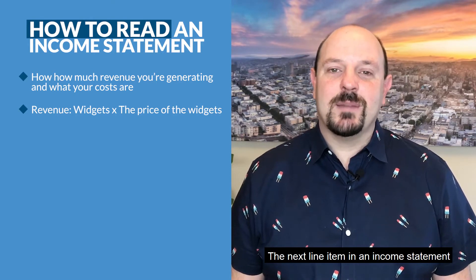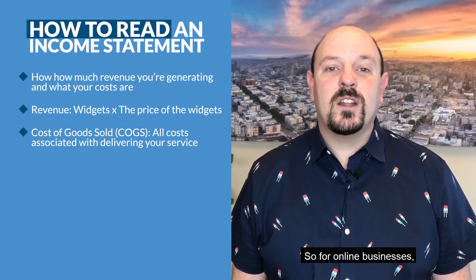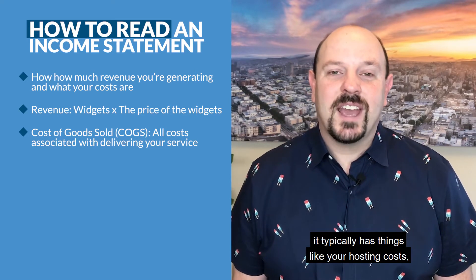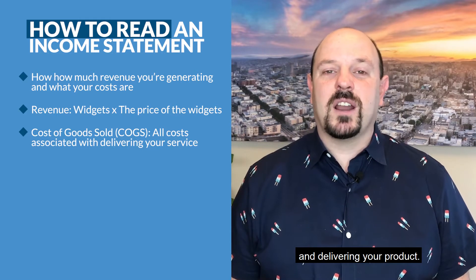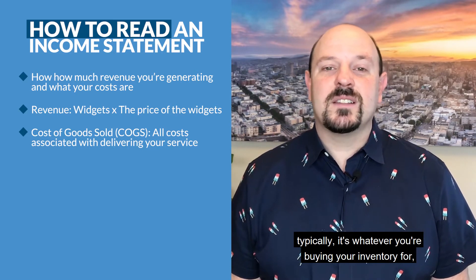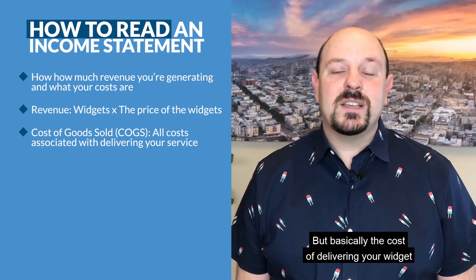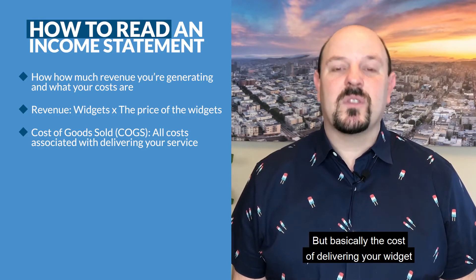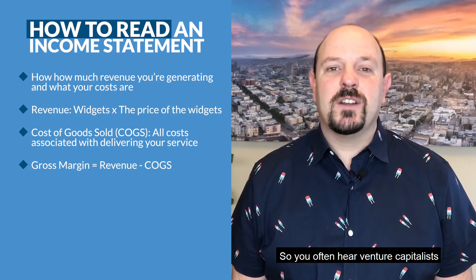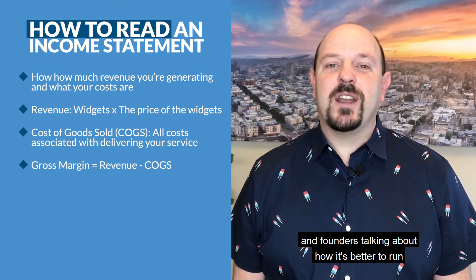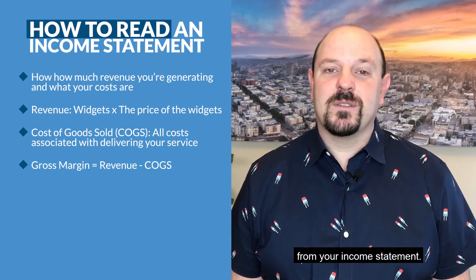The next line item in an income statement is your cost of goods sold. This is all the costs associated with delivering your service or selling your widget. For online businesses like SaaS companies, it typically includes things like hosting costs, customer support costs, and everything that goes into developing and delivering your product. For e-commerce providers, it's typically whatever you're buying your inventory for, plus sometimes shipping charges or 3PL charges. Basically it's the cost of delivering your widget or service. You subtract that from revenue and this gives you gross margin. Venture capitalists and founders often talk about how it's better to run or invest in a high gross margin business because that means you have a lot more cash and margin to work with.